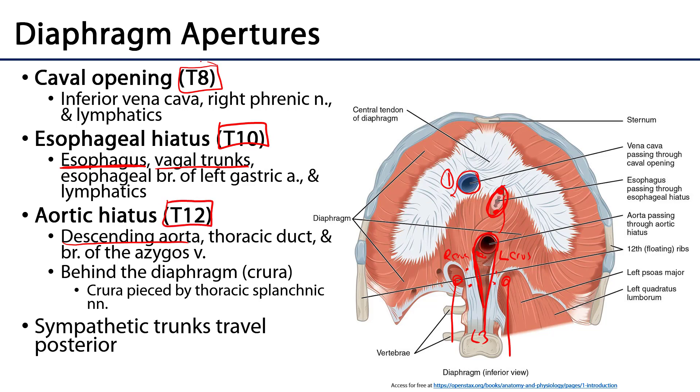So to summarize the aperture levels: caval at T8, esophageal at T10, and aortic at T12.